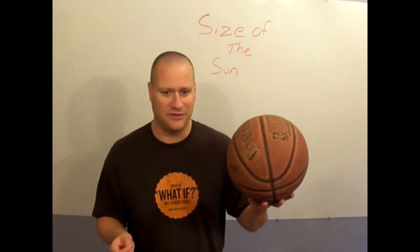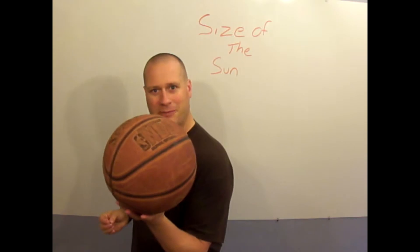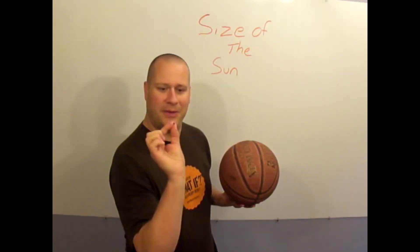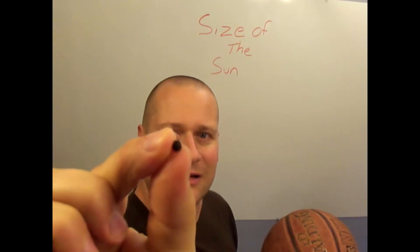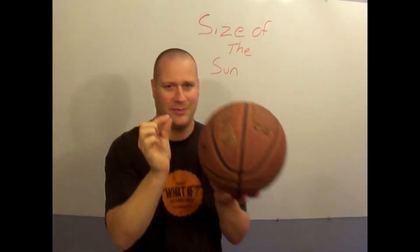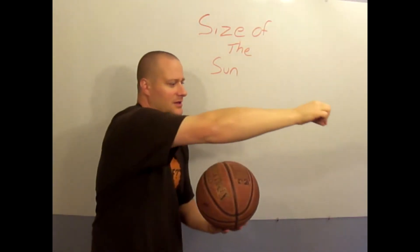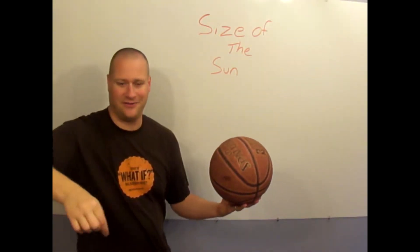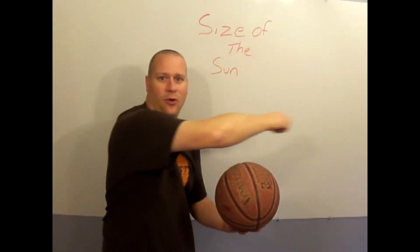We're going to try to do some pictures and images to help get an idea of just how big the Sun and the Earth is. We'll use a picture of a basketball and a peppercorn. Basketball is the Sun, peppercorn is the Earth. You can see that tiny little peppercorn there compared to this huge Sun.